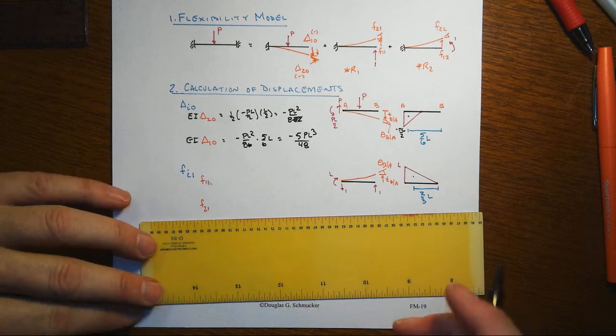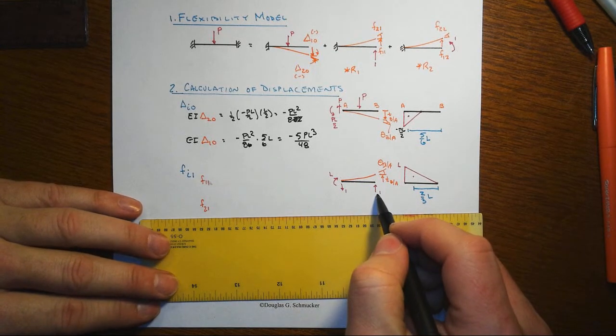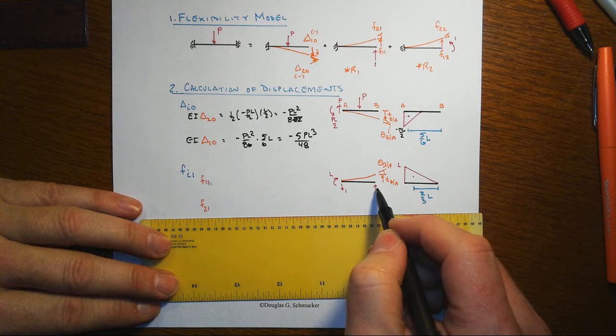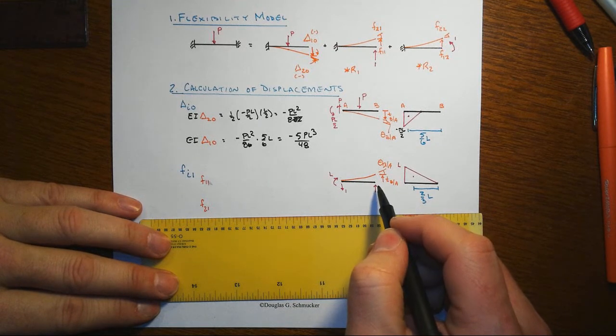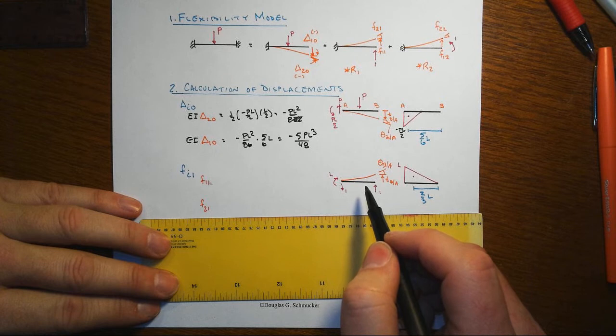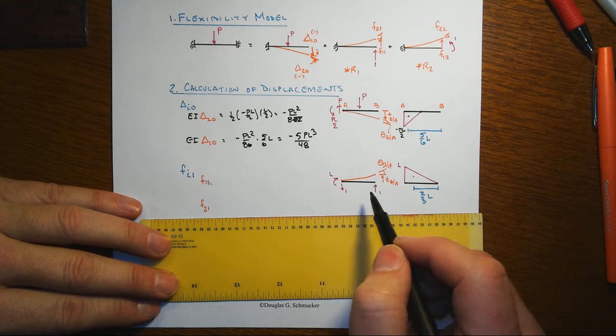Next setup then is for putting the one-unit load in the degree of freedom one, which is the shear or the translational direction. And conveniently here, just happenstance, the whole approach is going to end up being the same, same kind of shapes and everything else.